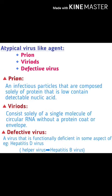Atypical virus-like agents include prions, viroids, and defective viruses. A prion is an infectious particle composed solely of protein with no detectable nucleic acid. A viroid consists solely of a single molecule of circular RNA without a protein coat or envelope.